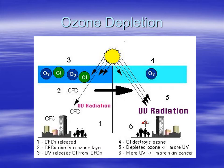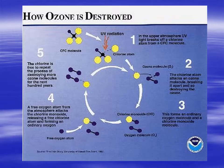The problem is that chlorofluorocarbons, when they got loose into the atmosphere, would float up and attack the ozone. If you attack the ozone, then you have less ozone in the stratosphere and more ultraviolet light making it to the ground. The ozone is destroyed in this fashion, and so this is what we call ozone depletion.